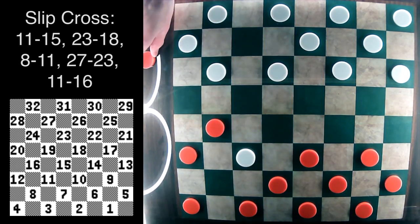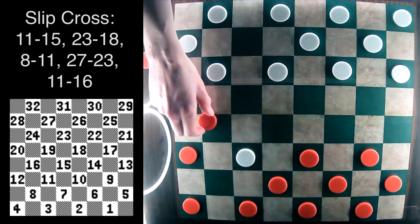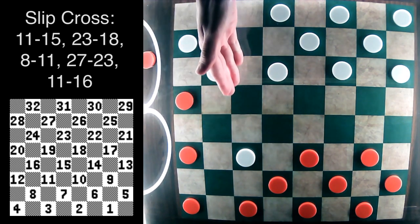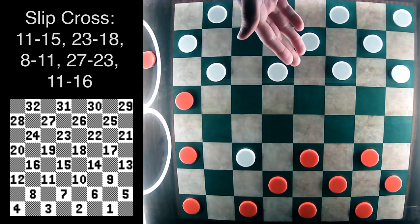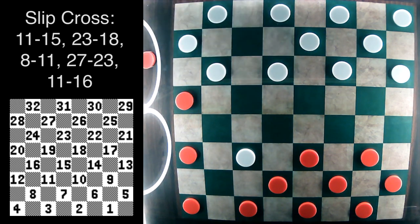However, after 16-20, white is double exposed and must give at least one piece back. So despite it not being played in the Grandmaster ranks, it's still worthwhile knowing as there are a number of traps and interesting play that can score you a number of wins.